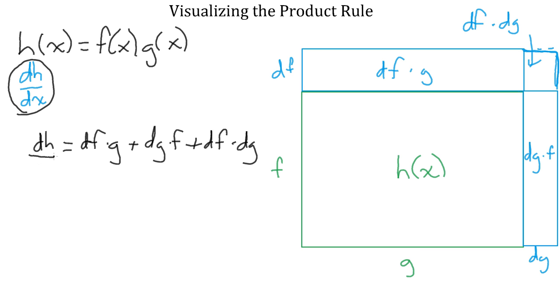But we want dh over dx, so we need to divide everything by dx. So, looking at these three terms individually, this first term becomes df over dx times g, and the second term becomes dg over dx times f. What about this third term?